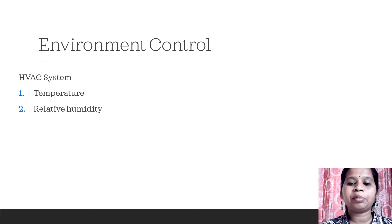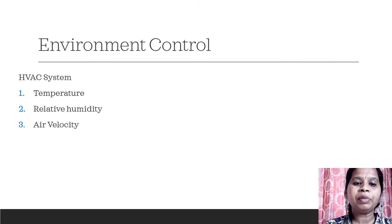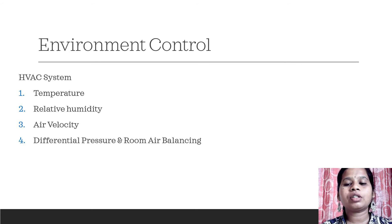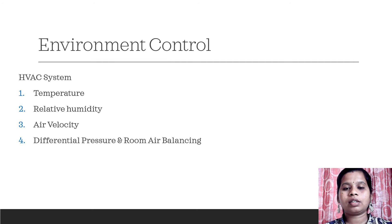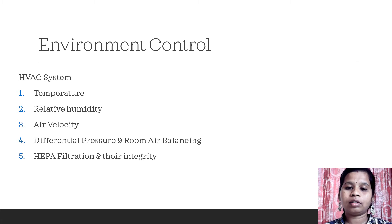Depending upon the product requirement, humidity can be adjusted. Next is air velocity — in case of HEPA filters, the air velocity normally required is between 80 to 120 feet per minute. Next is differential pressure and room-to-room air balance. To maintain the differential pressure in different areas, we are supposed to keep a difference of 15 pascals. This can change with door opening and closing, so the pressure must be adjusted accordingly.